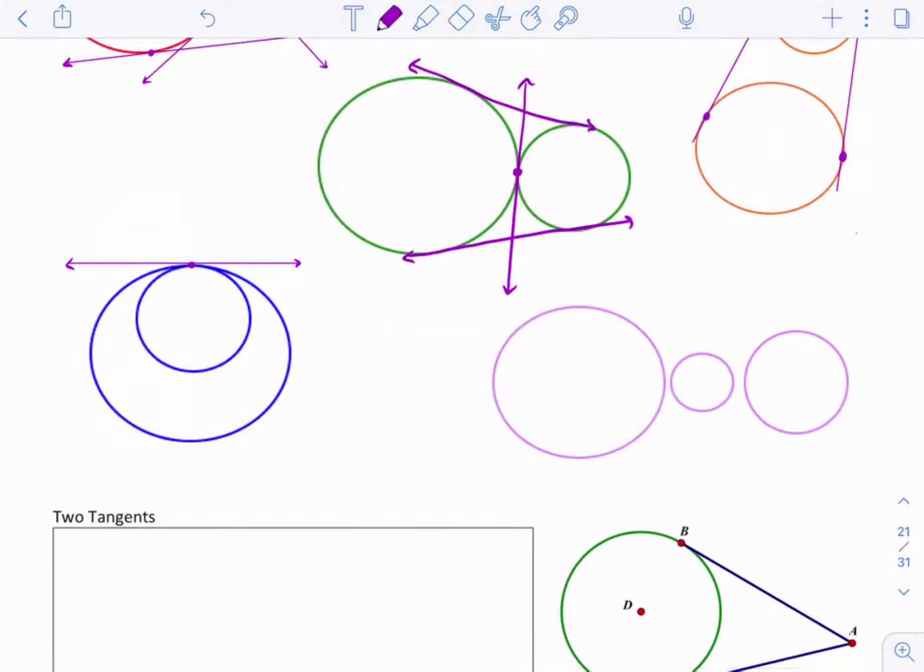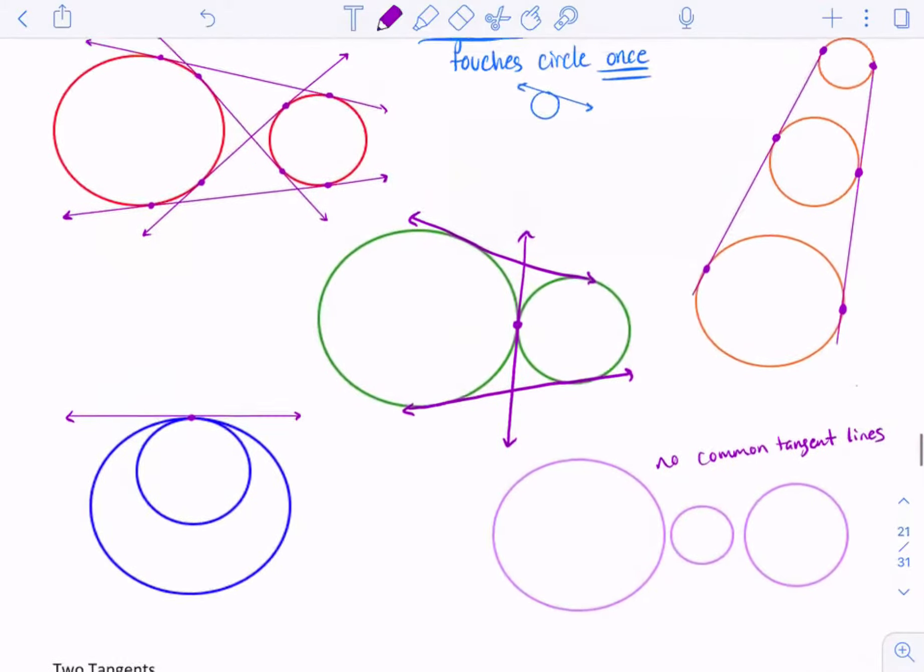Now if you look at this last group of circles, I can't really make a common tangent line. You see this? It doesn't really work. So here there are no common tangent lines. I always like having an example that doesn't work so you really understand what does work.